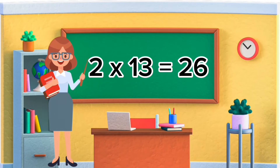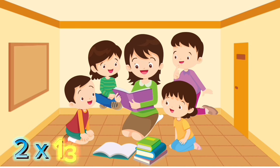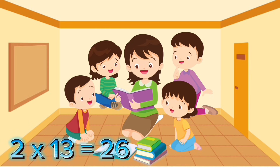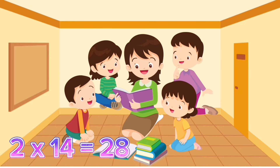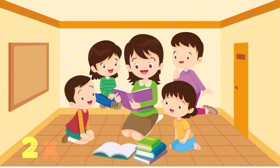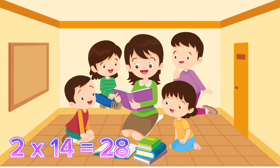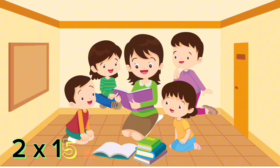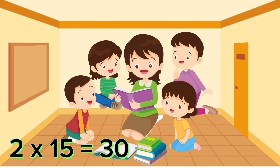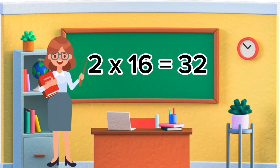Two thirteens are twenty-six. Two thirteens are twenty-six. Two fourteens are twenty-eight. Two fourteens are twenty-eight. Two fifteens are thirty. Two sixteens are thirty-two.